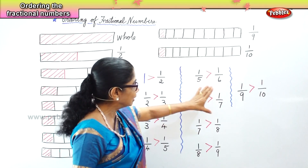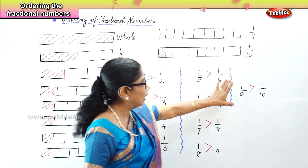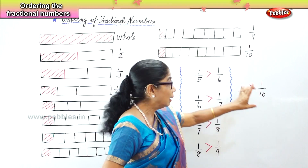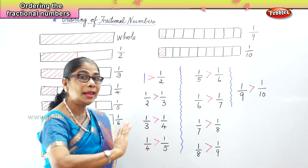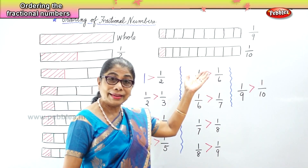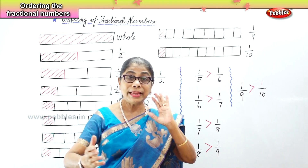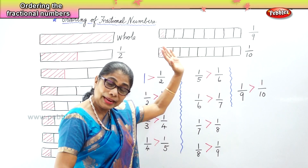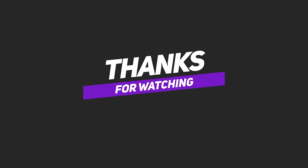Similarly, one by six and one by seven — smaller the denominator, the greater the fraction. One by nine and one by ten — smaller the denominator, bigger the fraction number. Now, if we have the same denominator, what we look at next is the numerator. In this case all numerators are the same — just one. But if we have to compare fractions with the same denominator and different numerators, you only have to look at the numerator.